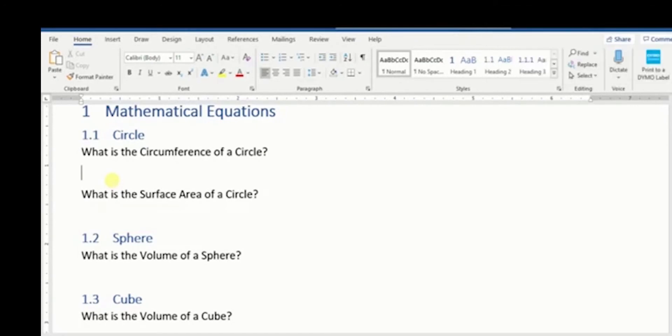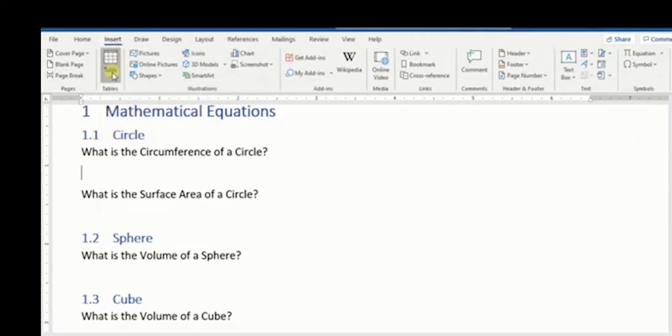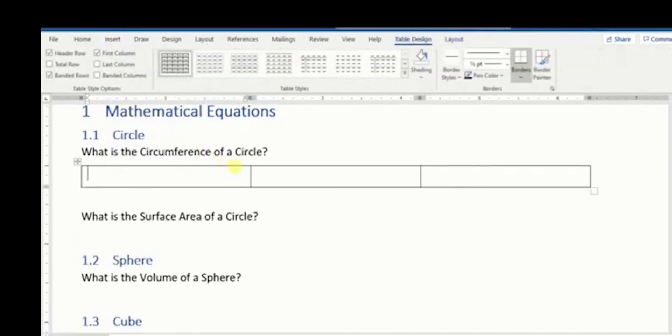Hello everyone, in this video I will show you how Microsoft Word will insert automatically an equation number for each of the equations that we will edit in this document. The first thing is to click on insert, then table, and we will create a table of three cells.